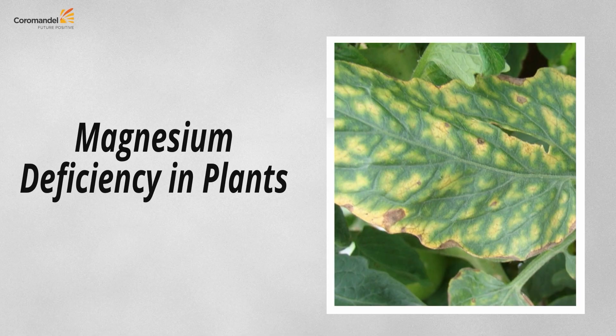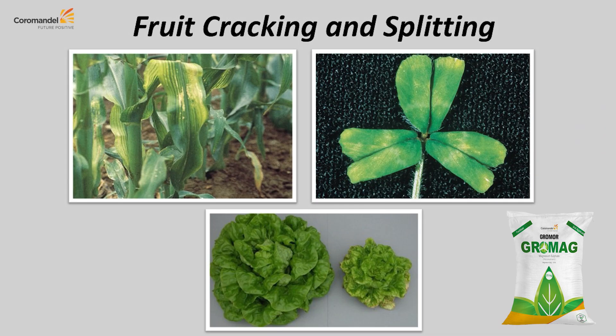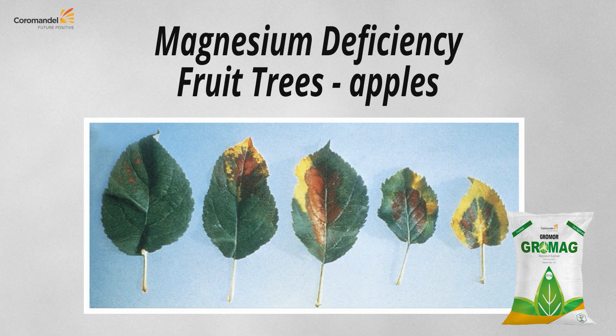Magnesium is the heart of chlorophyll. Without chlorophyll, the plant cannot perform proper photosynthesis or metabolic activities. Deficiency causes interveinal chlorosis of the leaves and improper photosynthesis. In maize, interveinal chlorosis is visible; in lettuce, very little growth occurs; and in apple, leaves become smaller and chlorotic, resulting in low yield and quality.